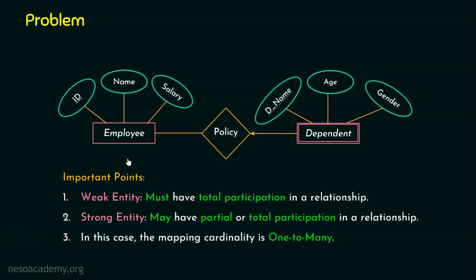When it comes to participation, we have two types of participation constraints in the ER model: total participation and partial participation. Let's consider three important points. Point number one: a weak entity set must have total participation in a relationship. The weak entity set must have total participation — this is point number one.